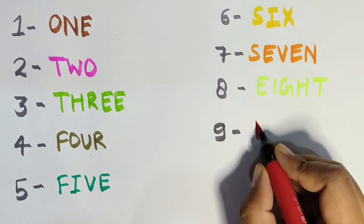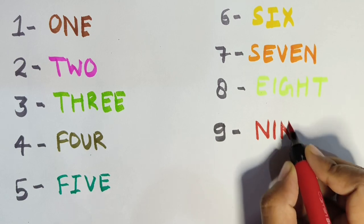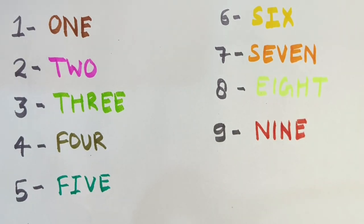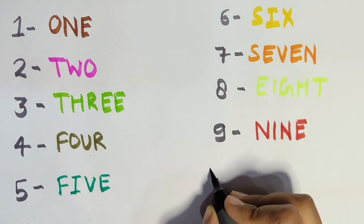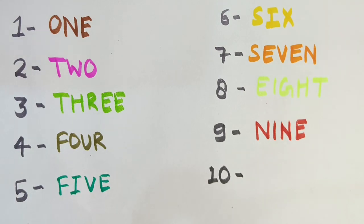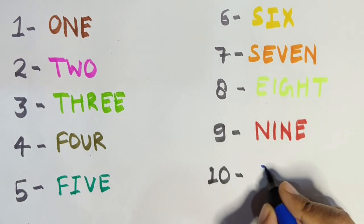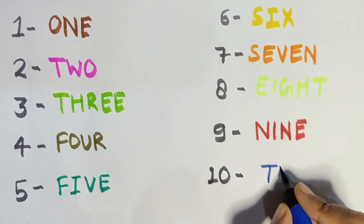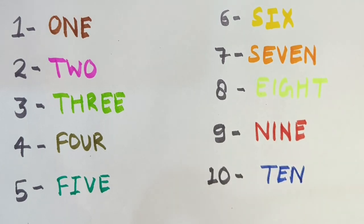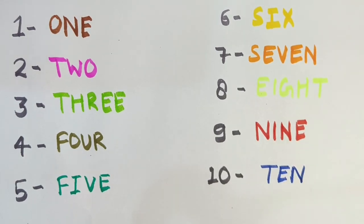N-I-N-E. Nine. Nine. Okay, one-zero — ten. What is the spelling of ten? T-E-N. Ten. That's it for today, guys.